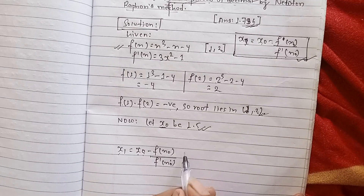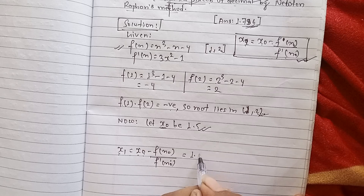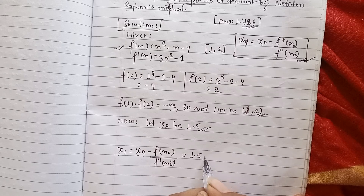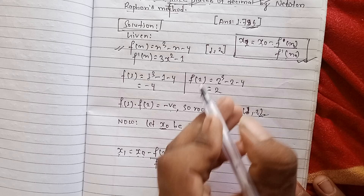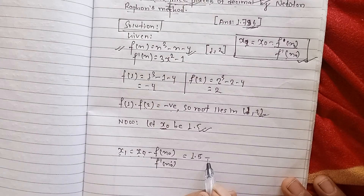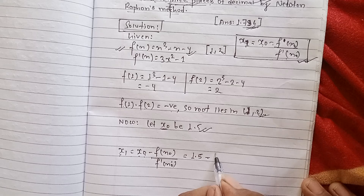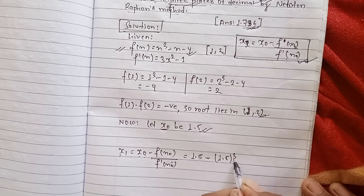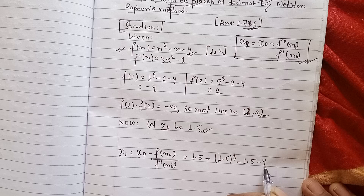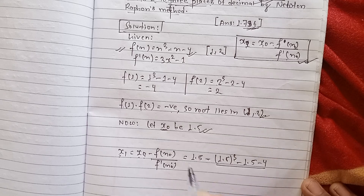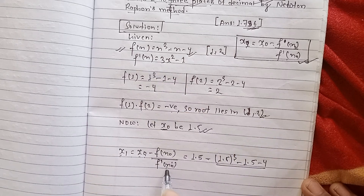Now, x₀ is 1.5. The function value at 1.5 is computed: 1.5 minus the expression (1.5³ minus 4), divided by the derivative f'(x₀). We calculate the first iteration using this formula.